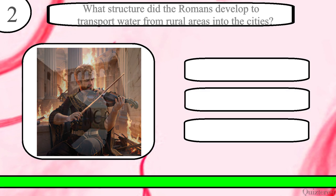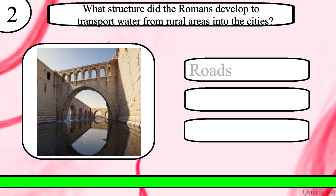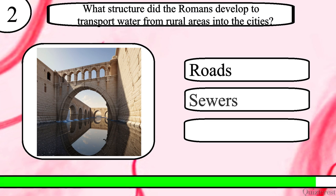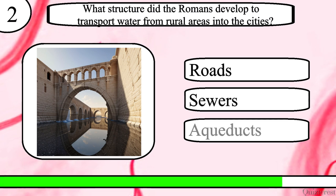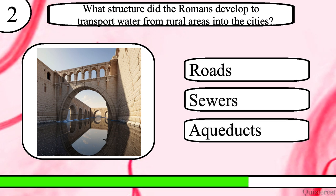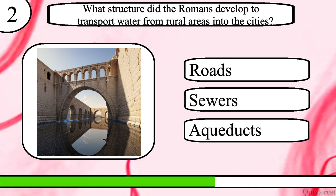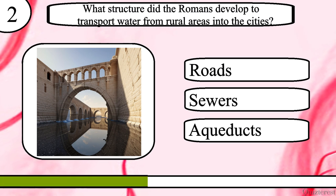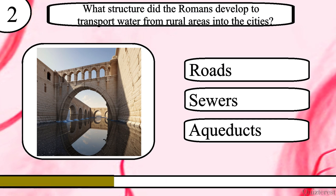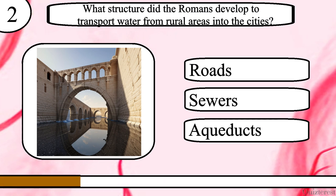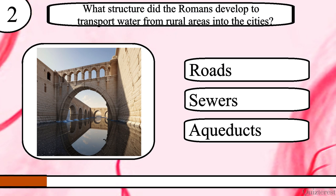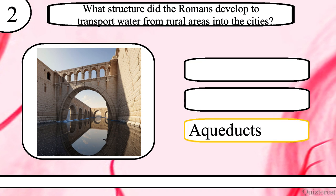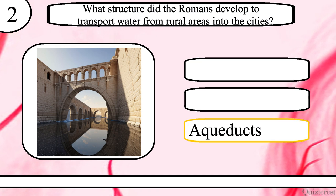Question 2. What structure did the Romans develop to transport water from rural areas into the cities? Roads, sewers or aqueducts? The correct answer is aqueducts.